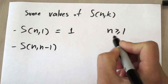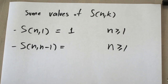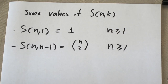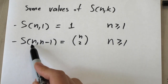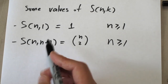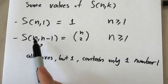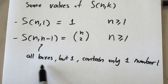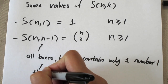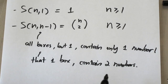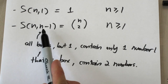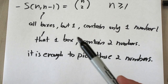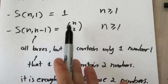S(n, n−1): you have n objects and n−1 boxes. Since there's one fewer box than objects, exactly one box must contain two objects while the rest each contain one. To determine the partition, it suffices to pick which two objects share a box — the rest follow automatically. So S(n, n−1) = C(n,2), n choose 2.